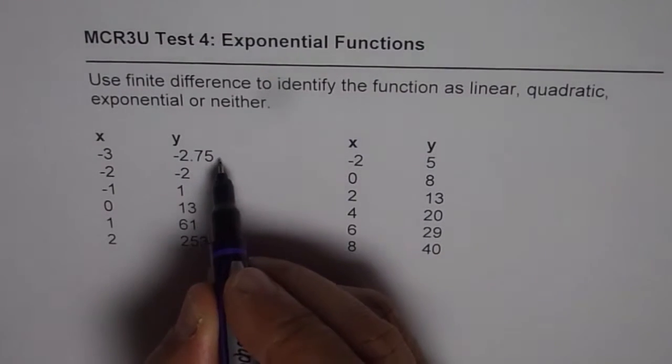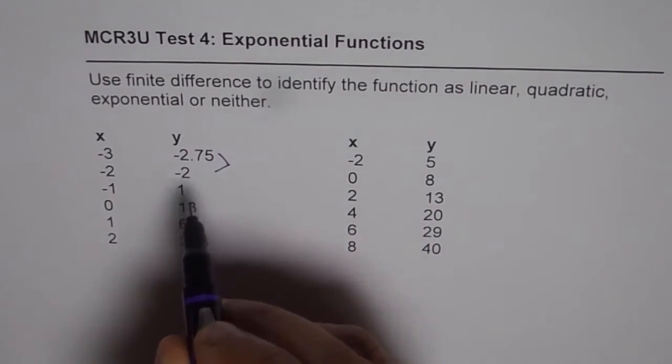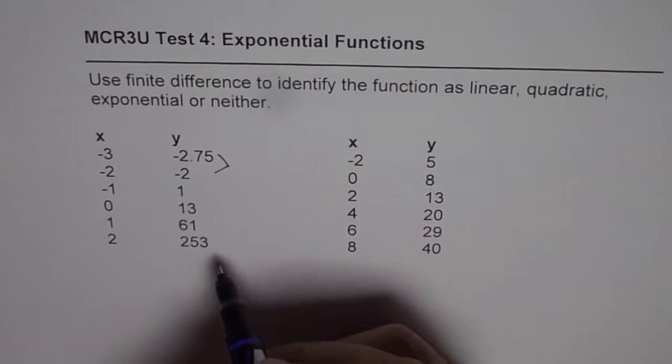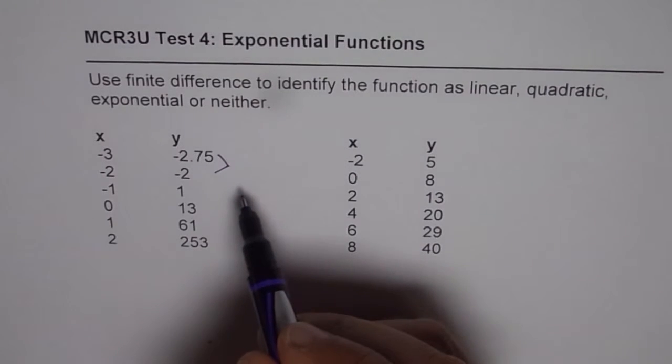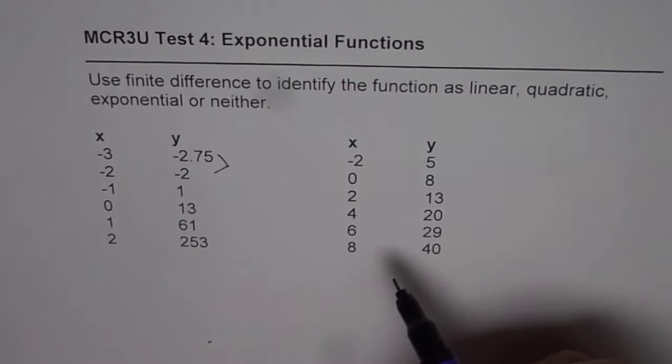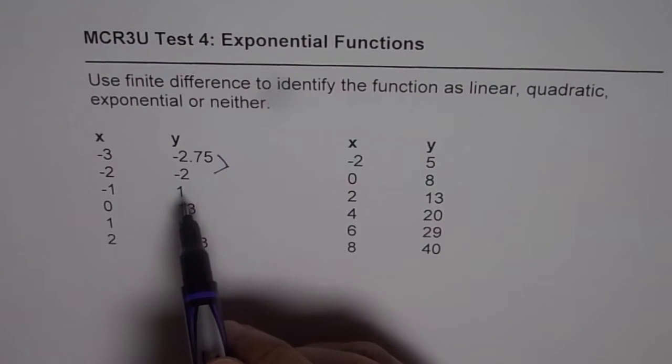So as you know, we will find the difference between consecutive values of y and see if they have a trend. If there are multiples of a number, then it is exponential. If the finite difference is constant, the first finite difference is constant, then it is linear. And if second finite difference is constant, then it is going to be quadratic. If none of those things are true, then it is neither. So let's begin with the very first one.